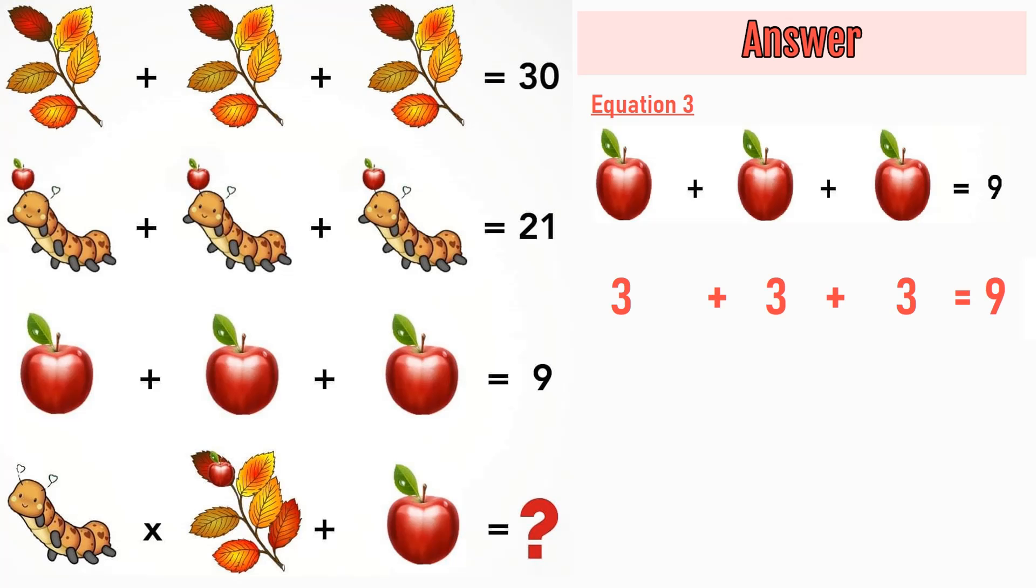Moving on to equation number 3, we have an apple plus an apple plus an apple is equal to 9. 3 plus 3 plus 3 is equal to 9. An apple is equal to 3.